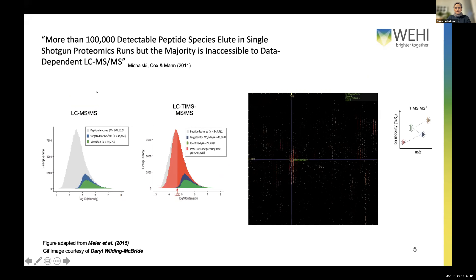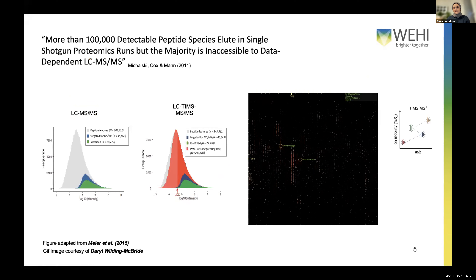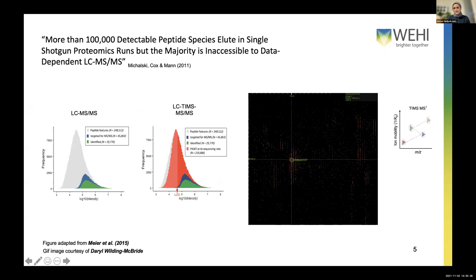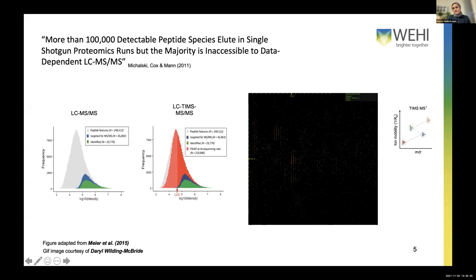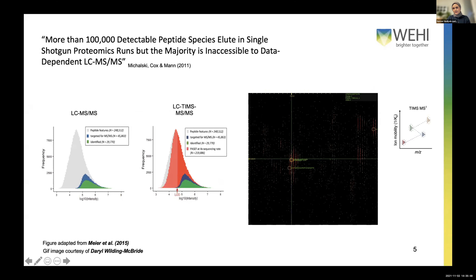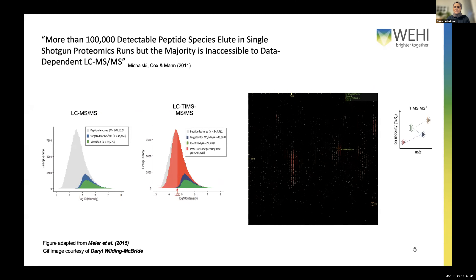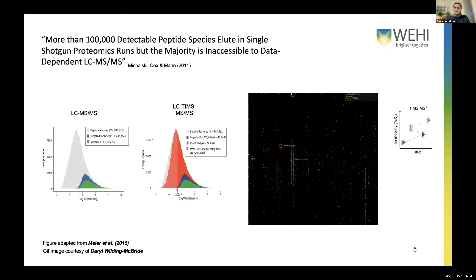There are more than one hundred thousand detectable peptide species that elute in a single mass spectrometry run. However, the majority of them are not really sequenced. In this GIF image, you are seeing peptides eluting in a given time frame and a given m/z range. The text appearing next to signals indicates the sequence is known — it's been identified. Signals with no text next to them are missed by sequencing. There are lots of signals that are missed, but they do actually exist.